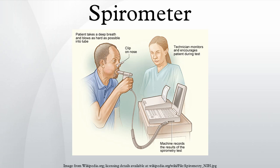In 1681, Borelli tried to measure the volume of air inspired in one breath. He assembled a cylindrical tube partially filled with water, with an open water source entering the bottom of the cylinder. He occluded his nostrils, inhaled through an outlet at the top of the cylinder, and measured the volume of air displaced by water.